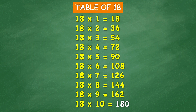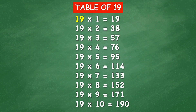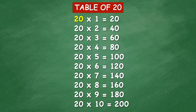18 times 10 equals 180. Table of 19: 19 times 1 equals 19, 19 times 2 equals 38, 19 times 3 equals 57, 19 times 4 equals 76, 19 times 6 equals 114, 19 times 7 equals 133, 19 times 8 equals 152, 19 times 9 equals 171, 19 times 10 equals 190.